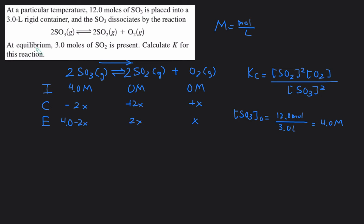It tells us that at equilibrium, there are 3.0 moles of SO2 present. Because our ICE table was in molarity, we should also convert this to molarity. So we can say that the equilibrium concentration SO2 equals the 3.0 moles divided by the 3.0 liters, which will give us 1 molar, so that means that this is going to equal 1, which means that x is going to equal 0.5.